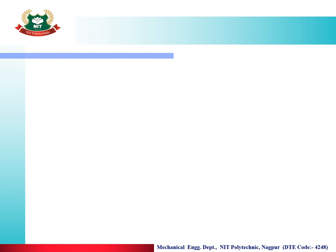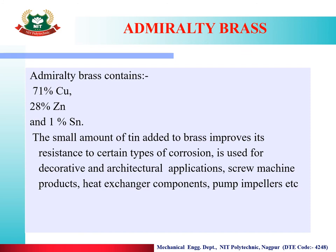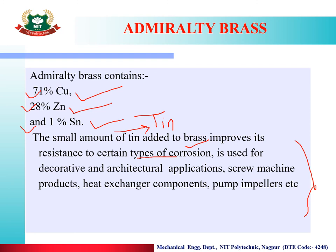The next brass is admiralty brass. Admiralty brass contains 71% copper, 28% zinc, and 1% tin. The small amount of tin is added to brass to improve resistance to a typical type of corrosion. It is used for decorative architectural applications, screw machine products, heat exchanger components, pumps, and impellers.